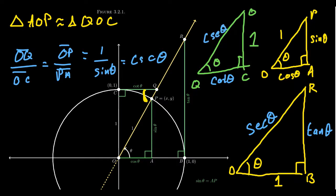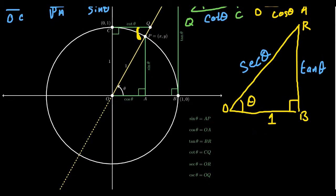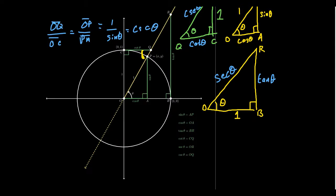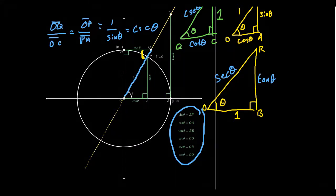Zooming out to see the whole picture, we can summarize: all six trigonometric ratios represent sides of triangles associated with various parts of this diagram involving secant lines, tangent lines, and their associated triangles. This gives us geometric interpretations of tangent, cotangent, secant, and cosecant — they represent distances related to tangent lines and secant lines. Cotangent is the complement of tangent, and cosecant is the complement of secant. And of course, cosine is the complement of sine.